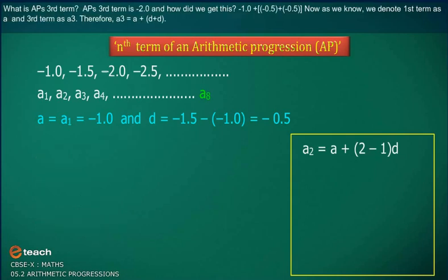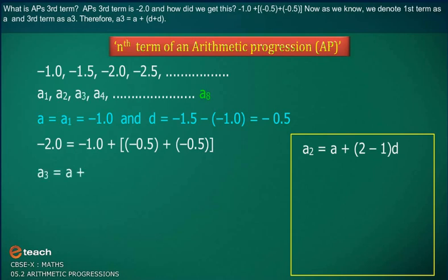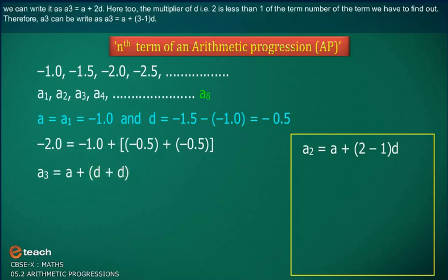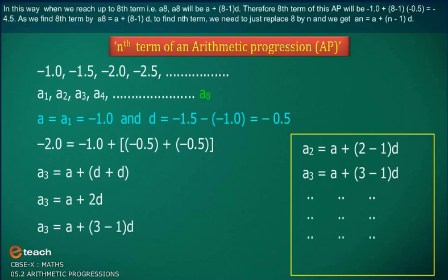The AP's third term is minus 2.0. We get this as: minus 1.0 plus (minus 0.5) plus (minus 0.5). We denote the third term as A3 = A + D + D, which gives A3 = A + 2D. Here too, the multiplier of D (which is 2) is one less than the term number 3. Therefore A3 = A + (3 minus 1)D.